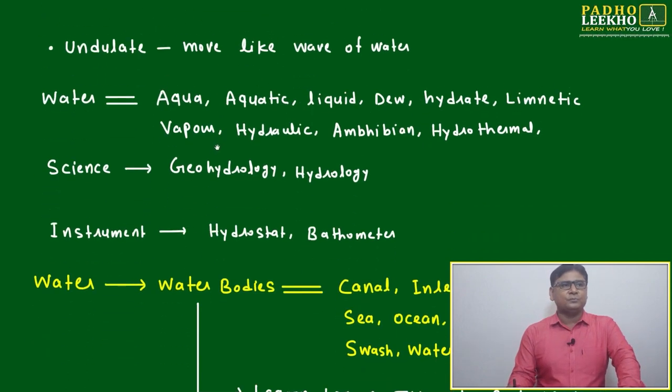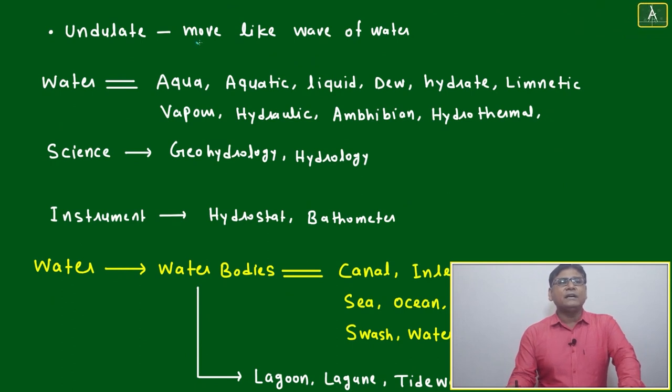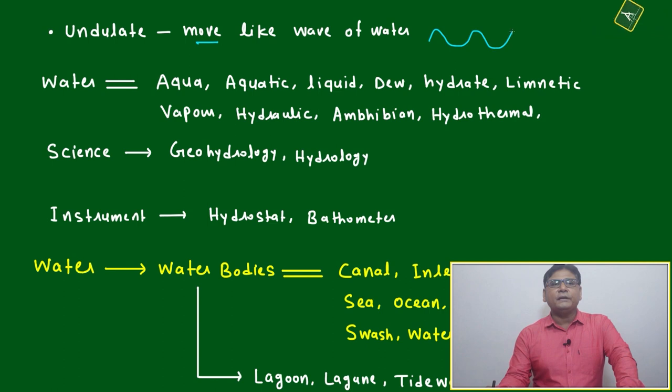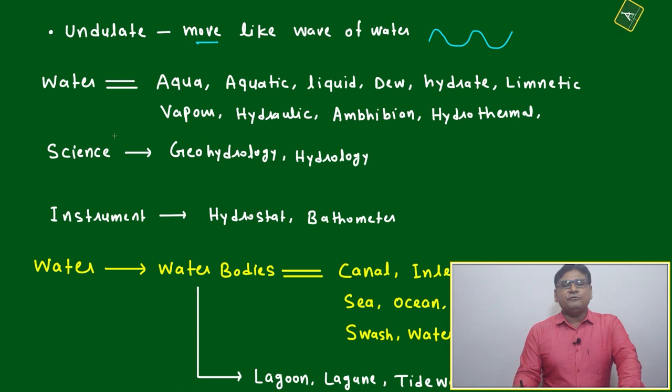Undulate means move like wave of water. That is undulate. This type of movement is there, that is called undulate movement. If you are thinking about any topic or any subject or about your life and you have the undulate movement, means you will not be able to decide anything.